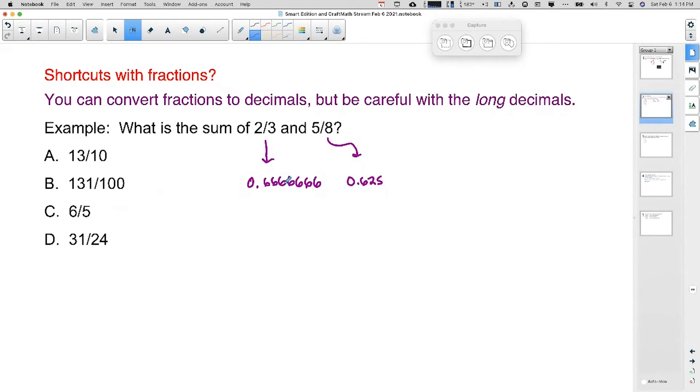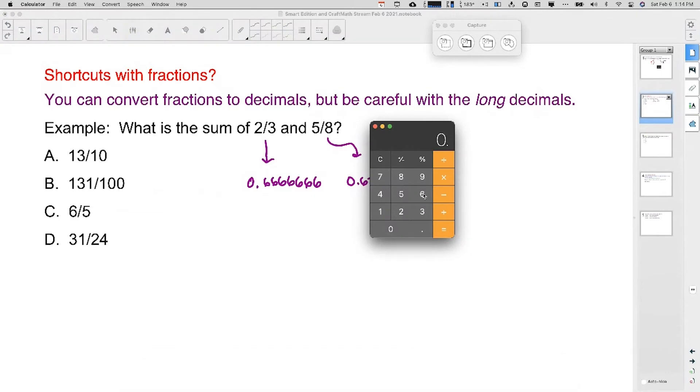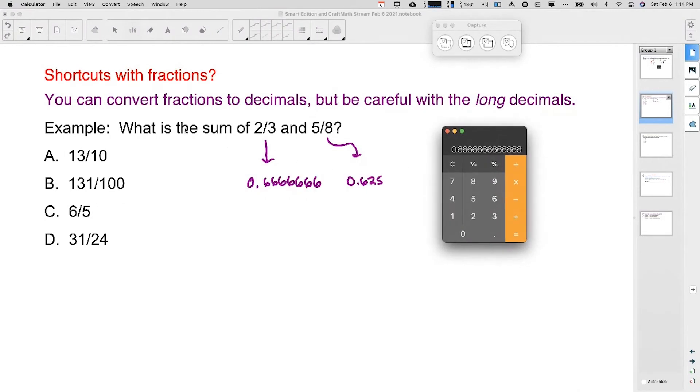So this decimal right here, I'm going to actually type that in. I'm just going to type in a bunch of sixes. It doesn't matter how many, just put a bunch of them up there. And since we want to find the sum, I'm going to add on the 0.625, which is that five eighths.